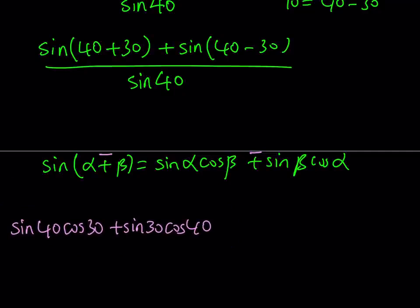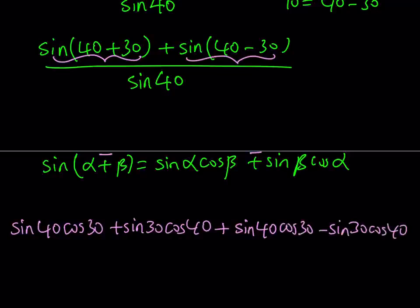And then, for the second part, I used the formula for this one, now I'm going to use it for the other part. Same formula, it's just going to be a minus sign. So I can write it as sin 40 cos 30 - sin 30 cos 40. And all of this is going to be divided by the denominator, which is sin 40.